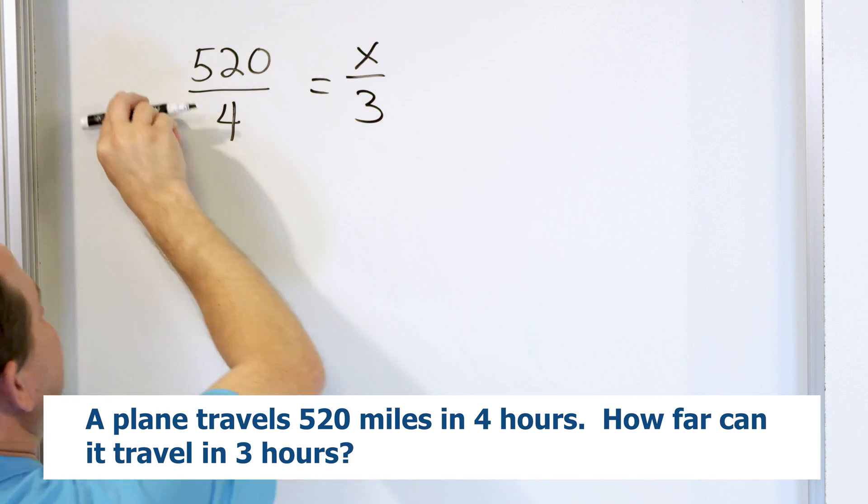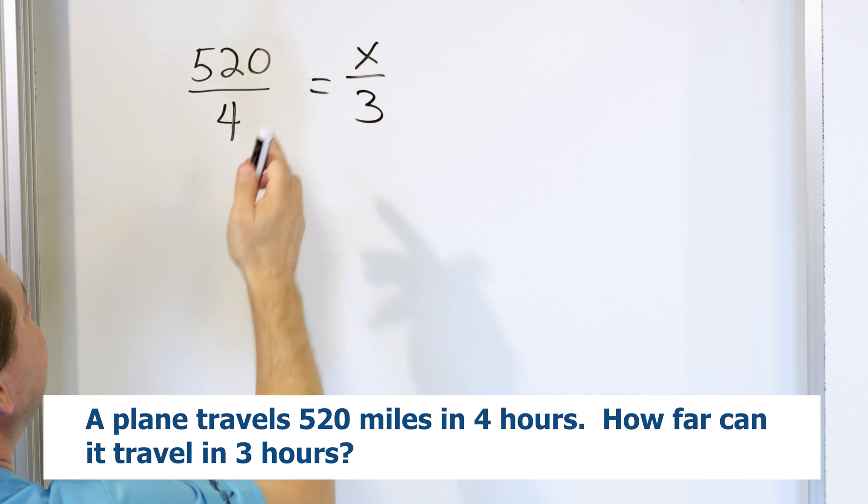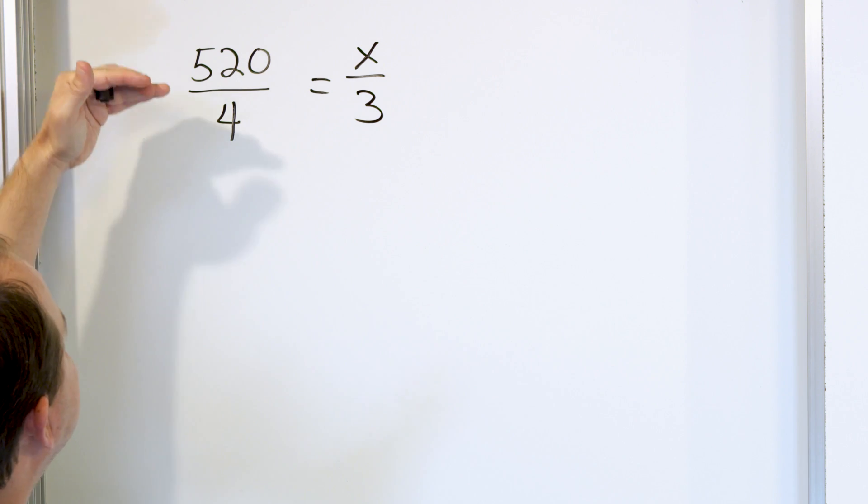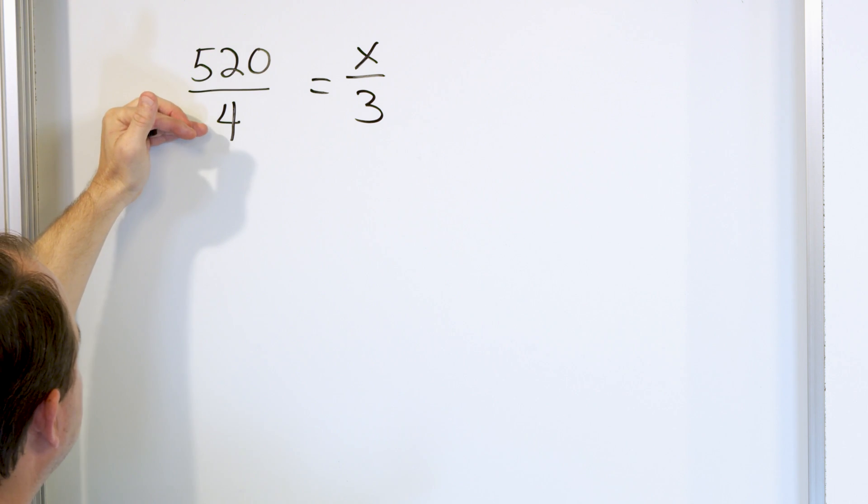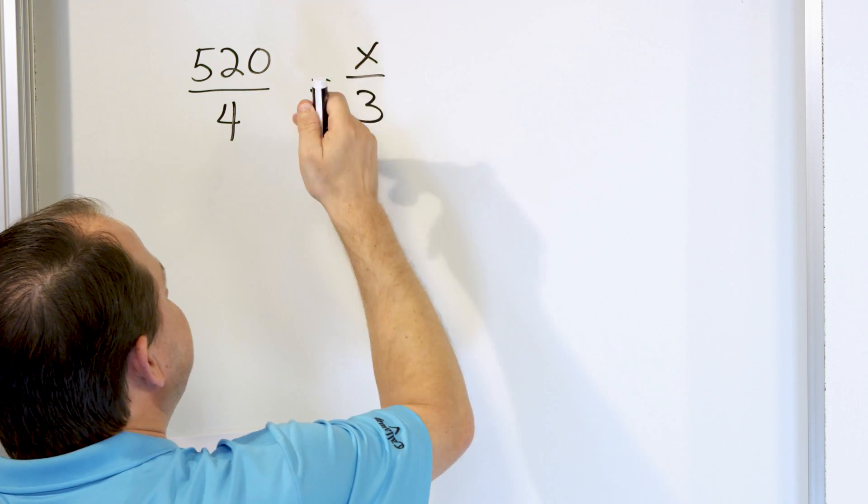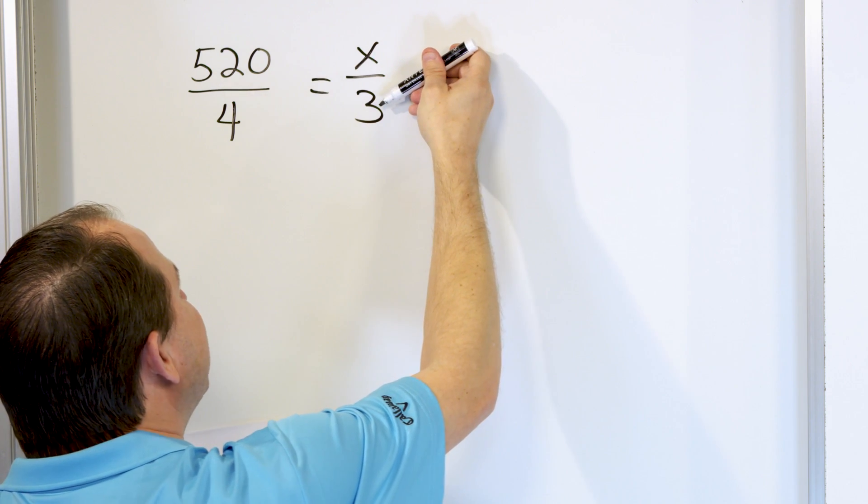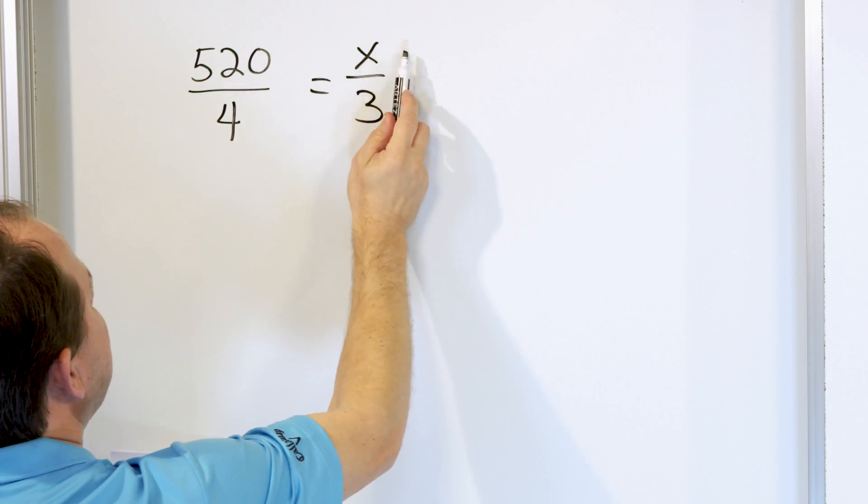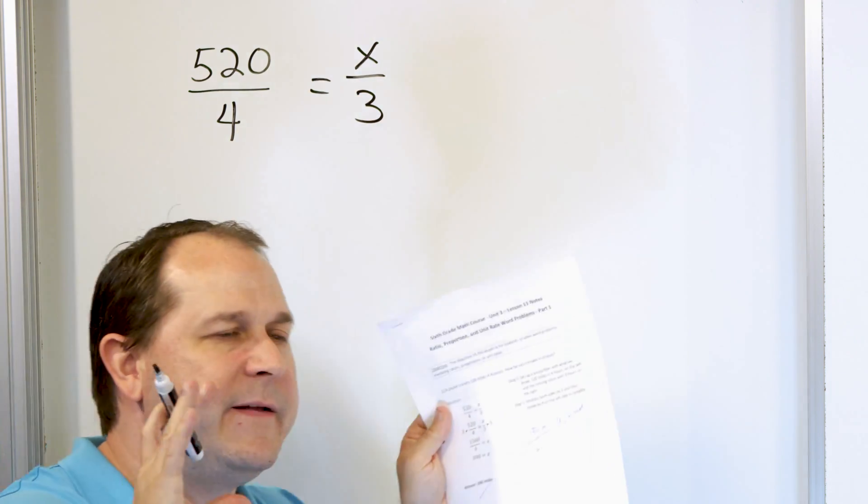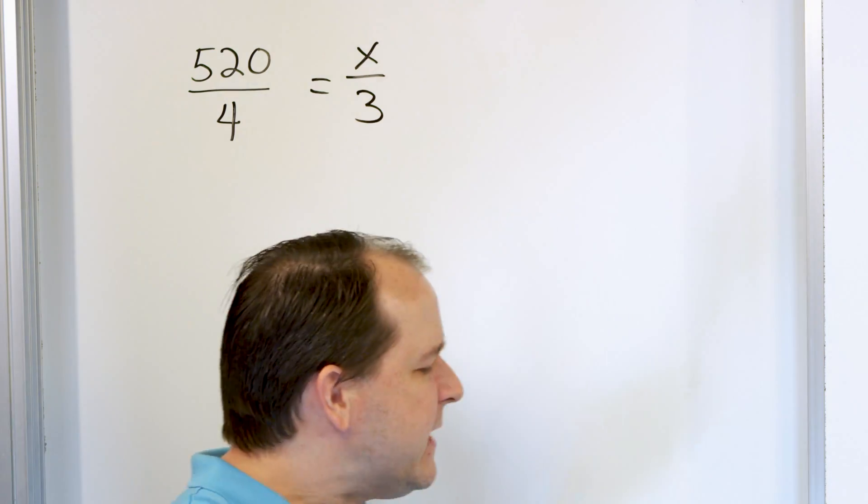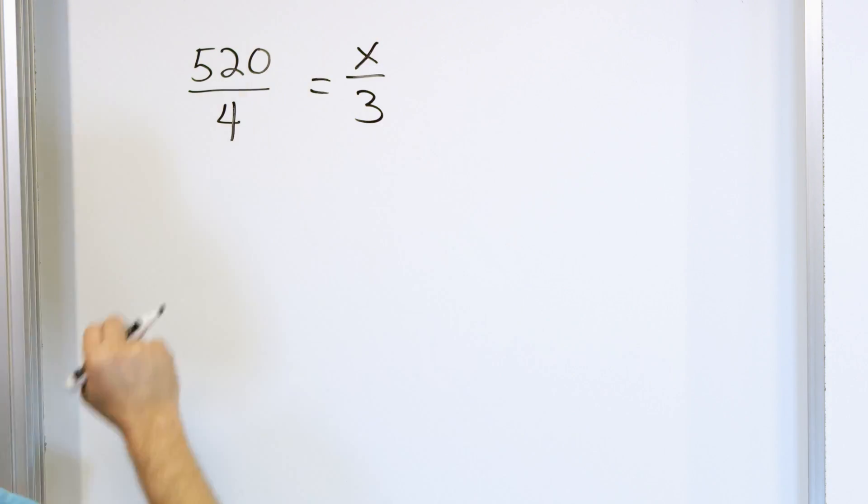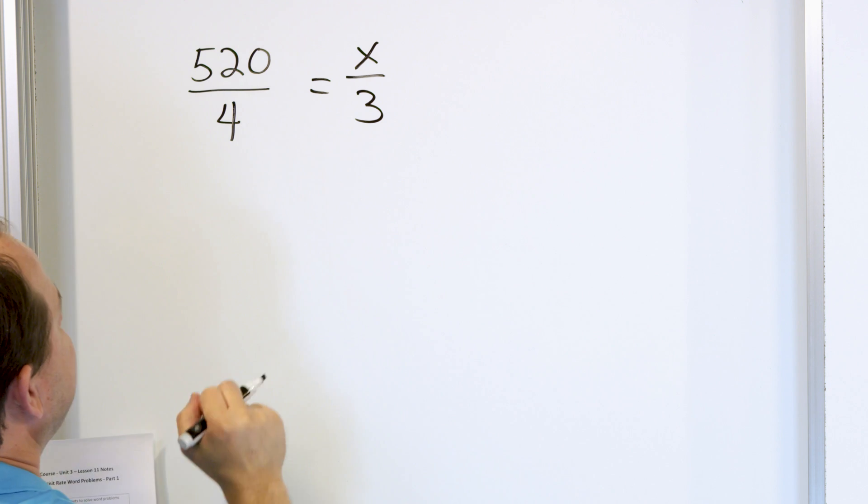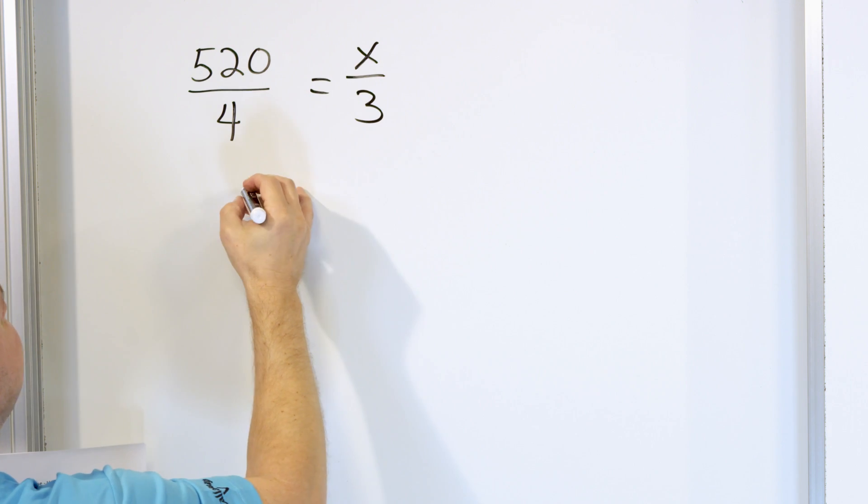These rates or these ratios are set equal to each other because we're assuming that the plane never speeds up or slows down. And so if it goes 520 miles in four hours, then according to that same rate of travel, then we should be able to figure out how far it goes in three hours and find the unknown. Notice we have miles and miles and hours and hours. You have to have the variables in the same places. Now we want to solve this equation, which we call a proportion. We're going to solve it for the unknown X. So let's rewrite what we have. 540 divided by 4 equals X over 3.